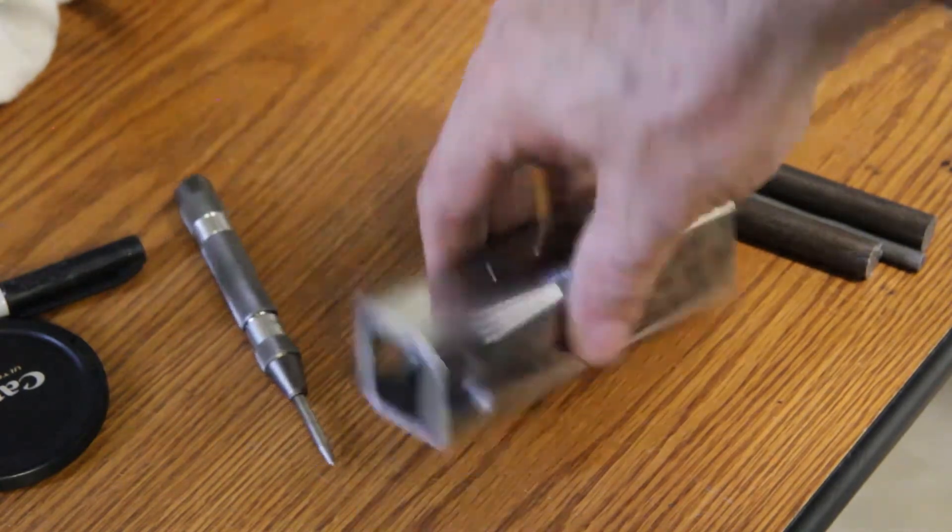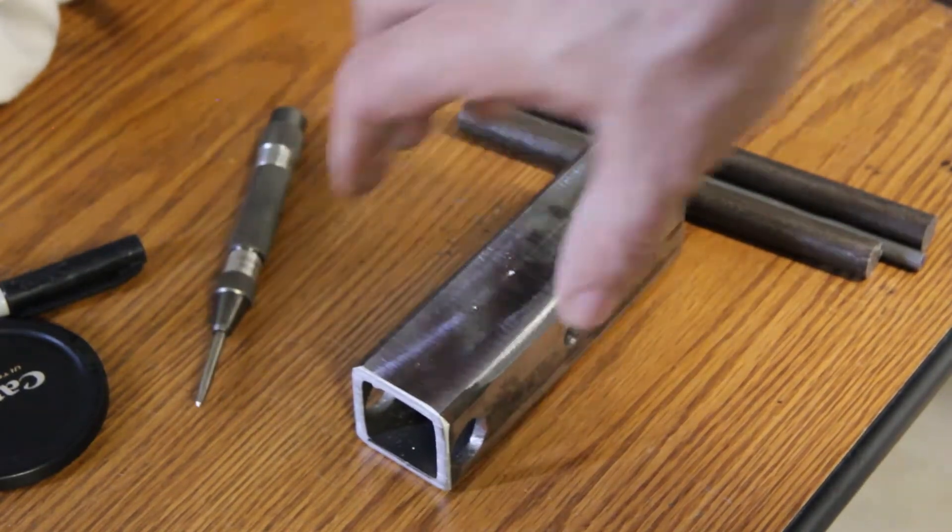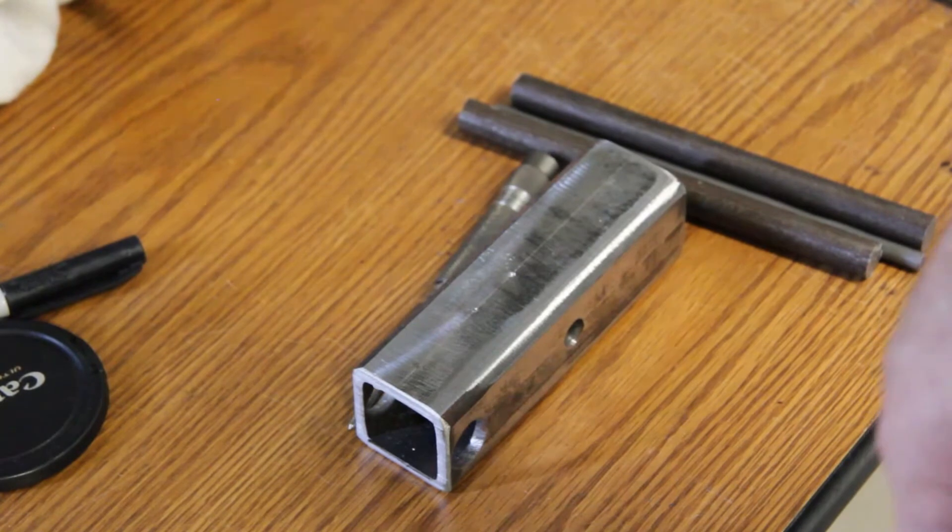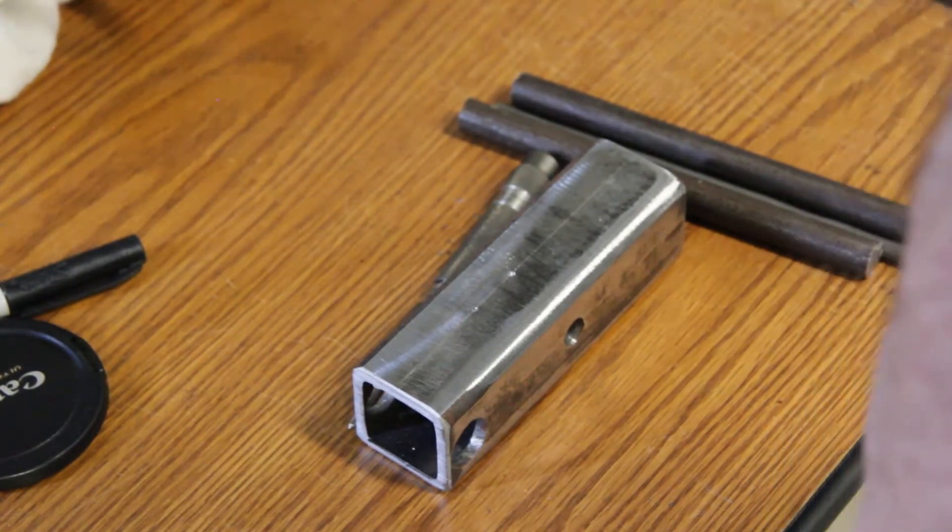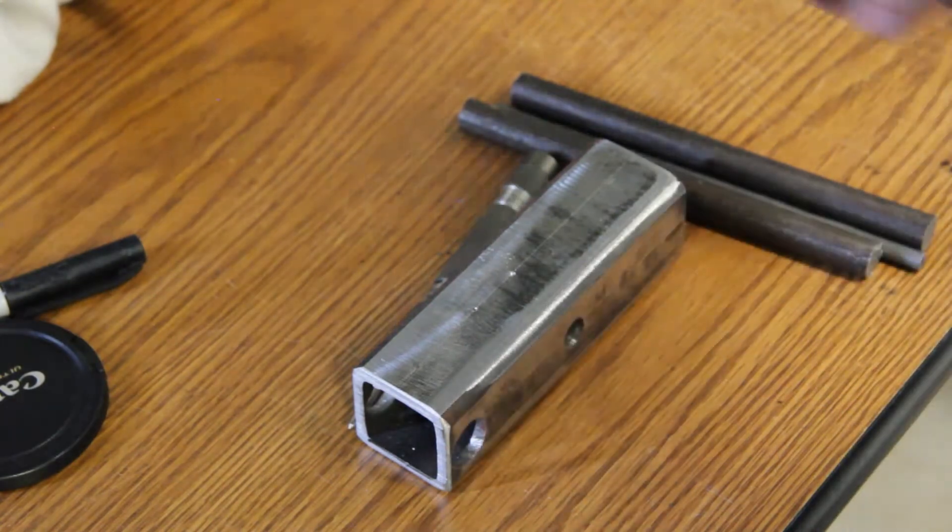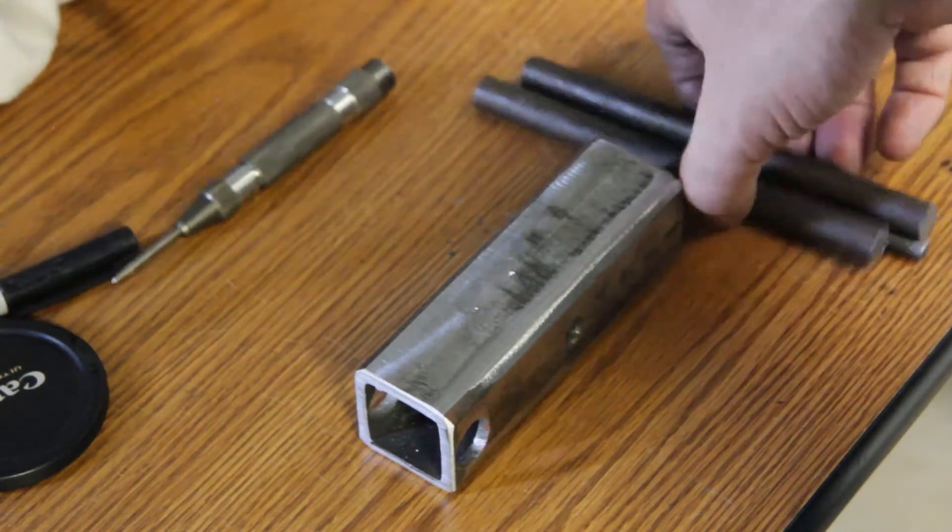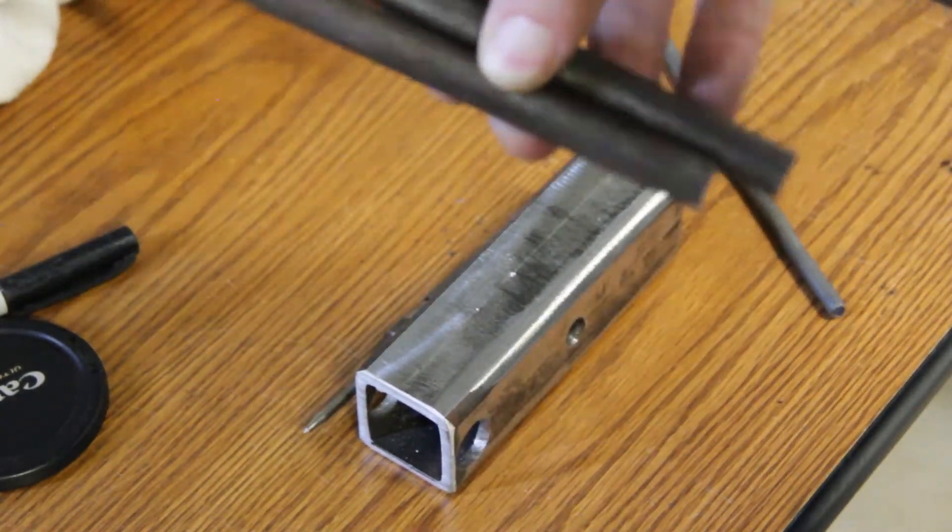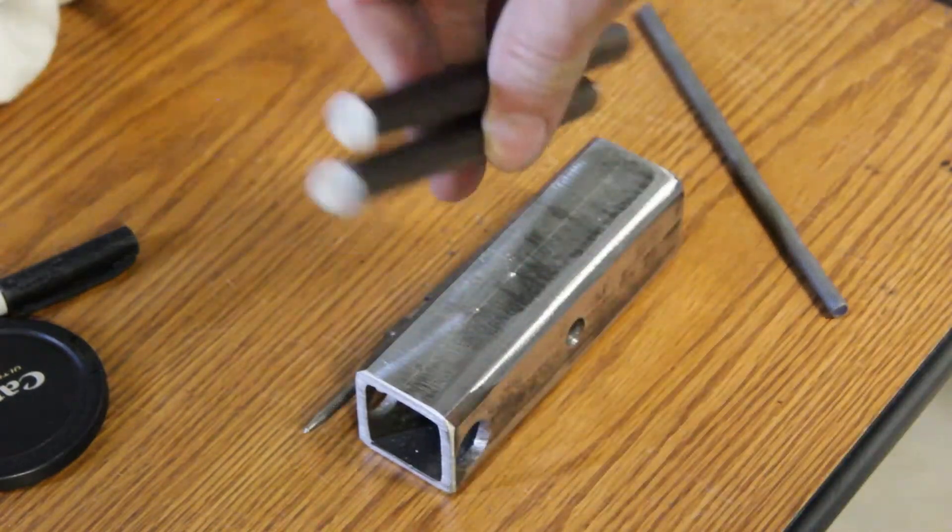I have some old scrap square tube lying around. There's no sense in going over and buying some brand new flat plate. The idea is to use what materials you have lying around. Then I have some half inch hot rolled steel rod.